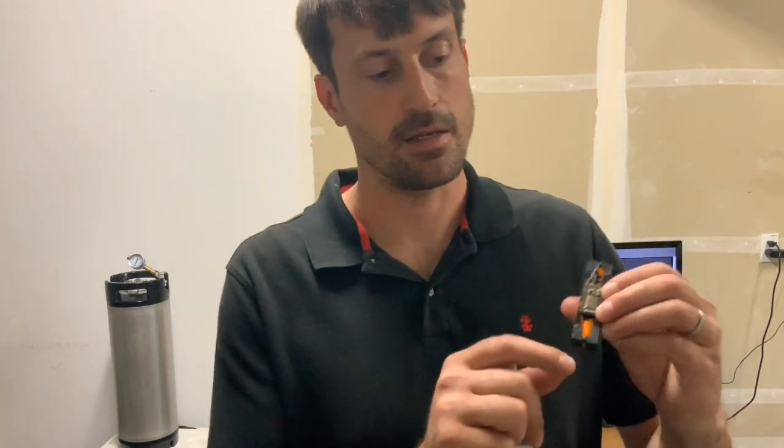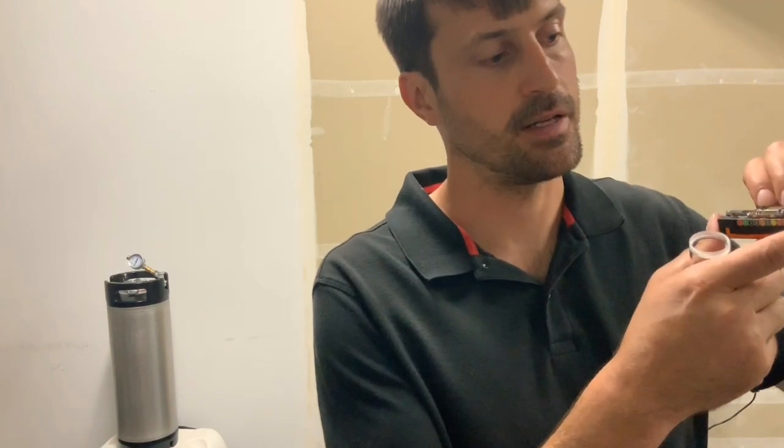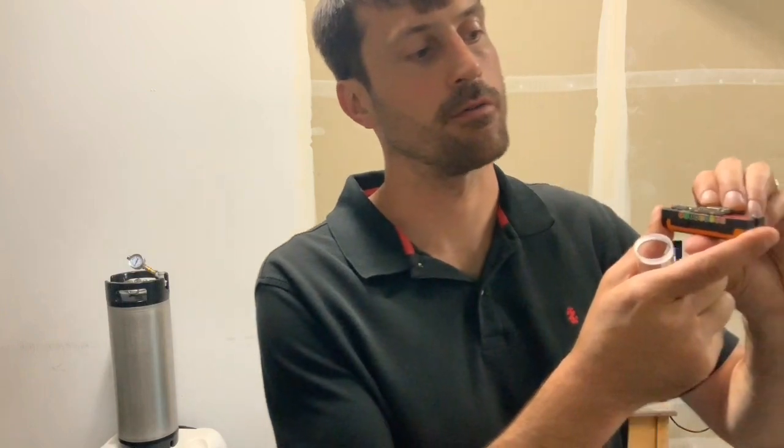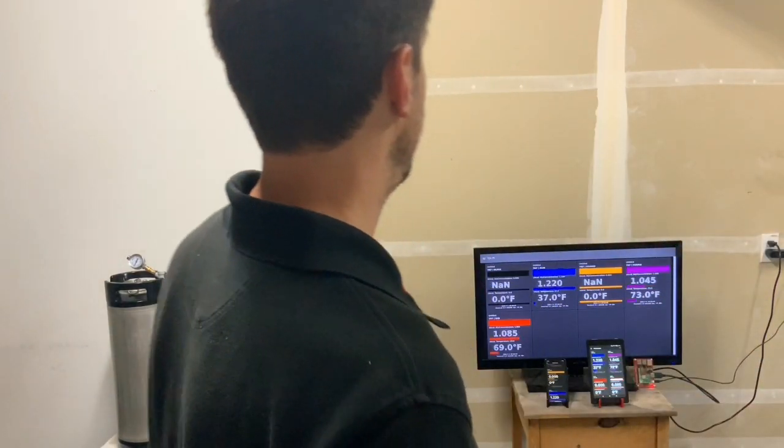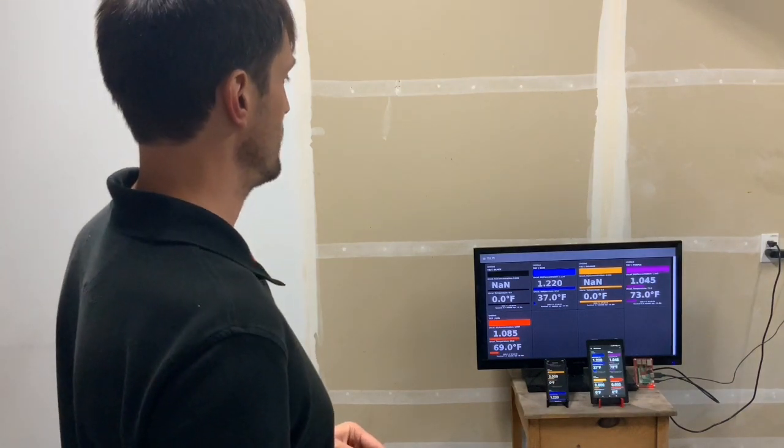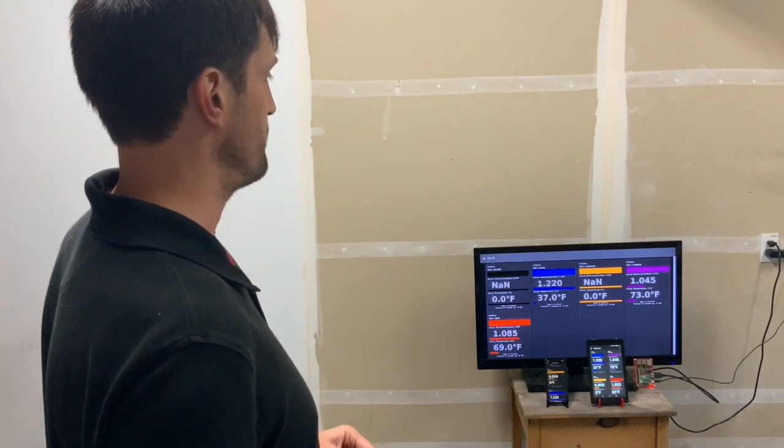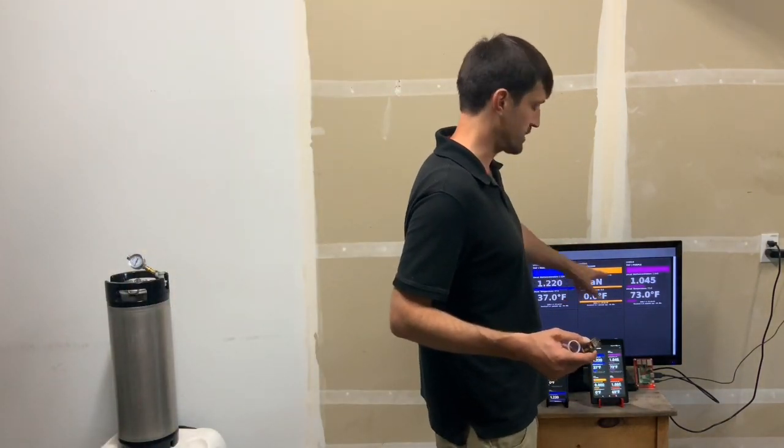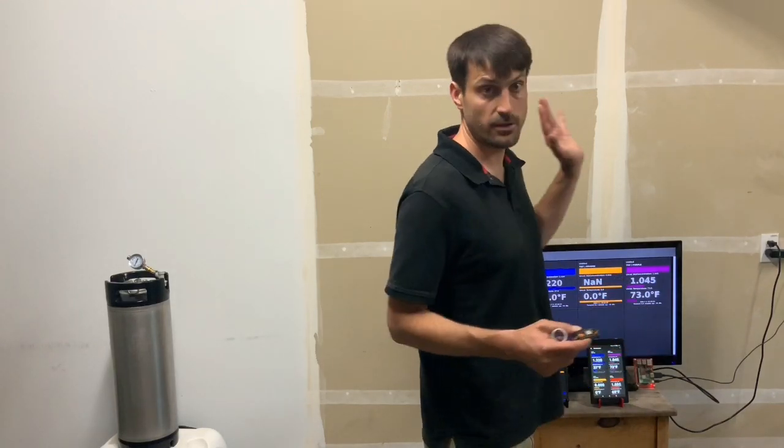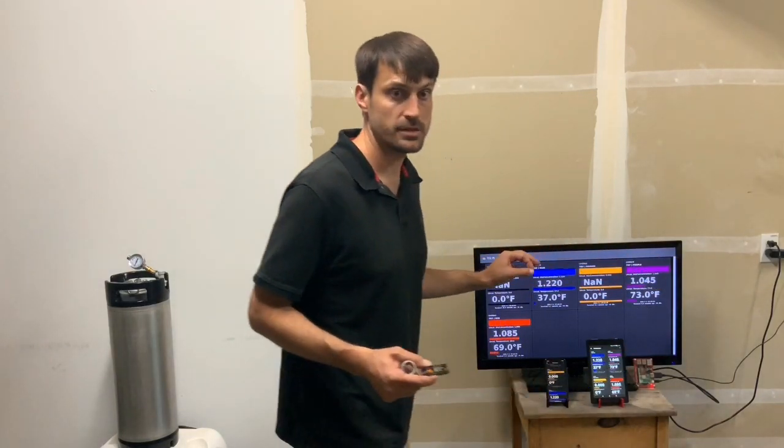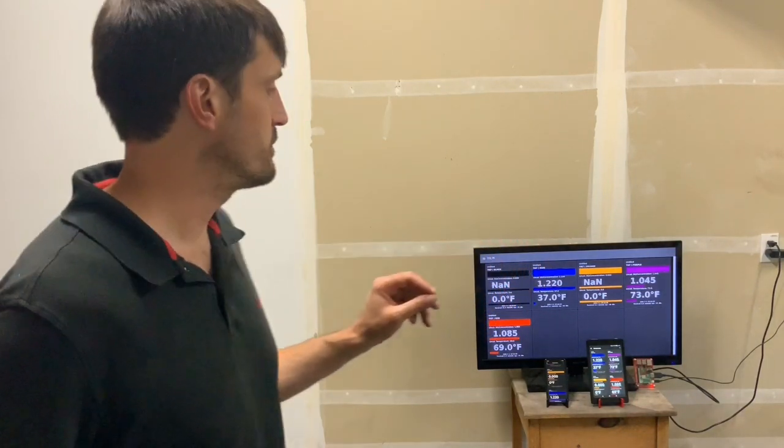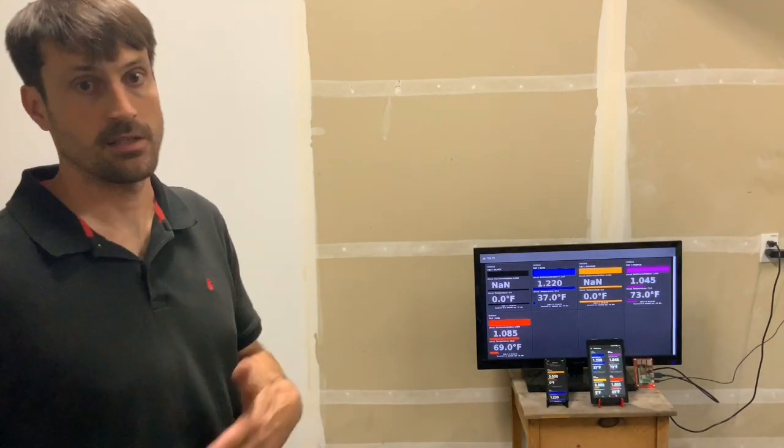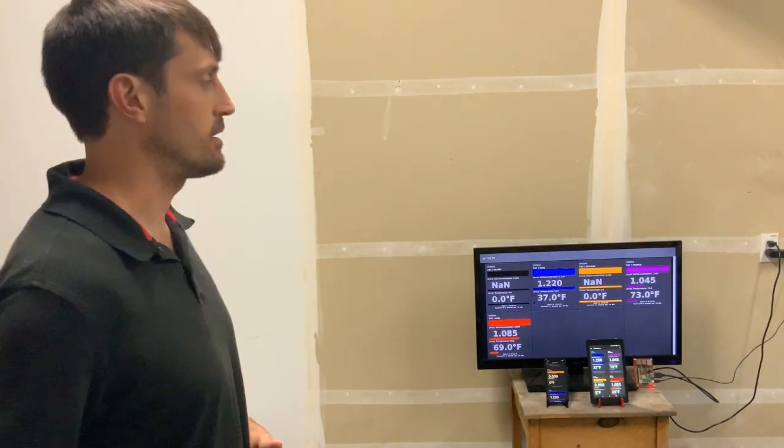So what I'm going to do first is press this button five times, as shown on the key. One, two, three, four, five. And as you can see here, you now can see an orange Tilt showing here as NAN and zero degrees. This is expected. When the Tilt first turns on, it will advertise zero SG and zero degrees Fahrenheit initially. That means you know that it's scanning for an orange Tilt.